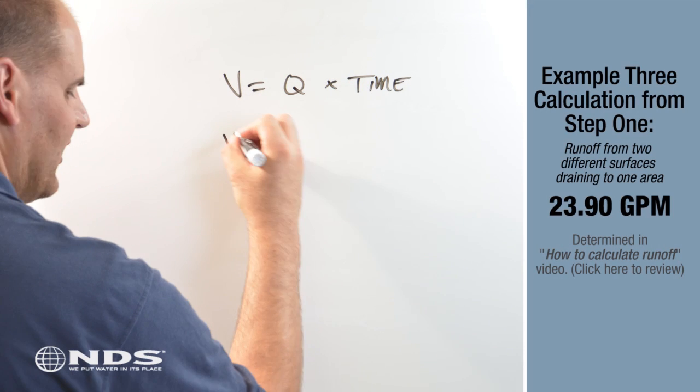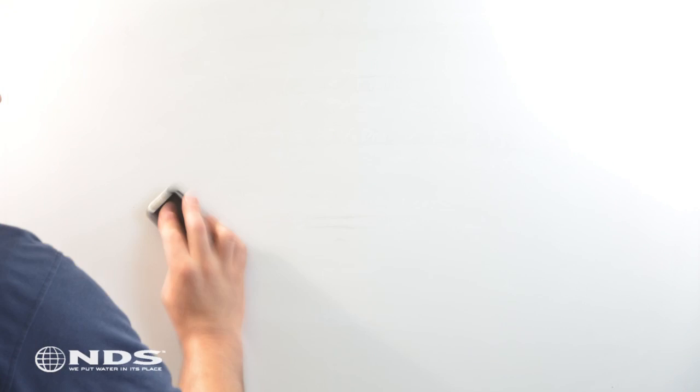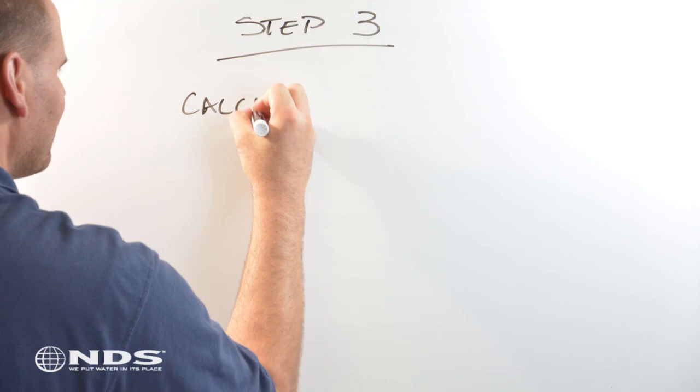Recalling from our previous example, 23.90 gallons per minute times 15 minutes equals 359 gallons of water to be stored. Now the last step.